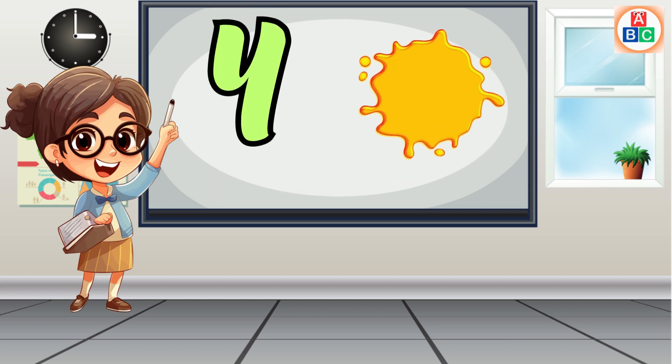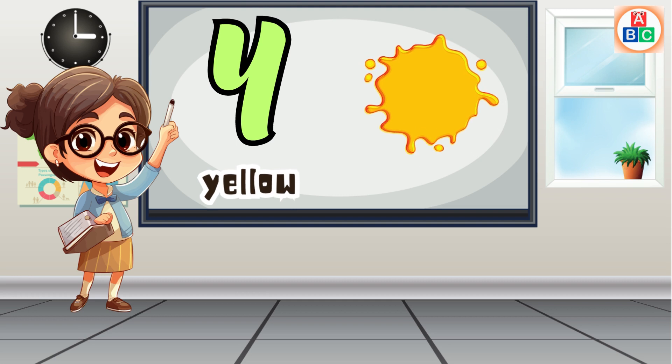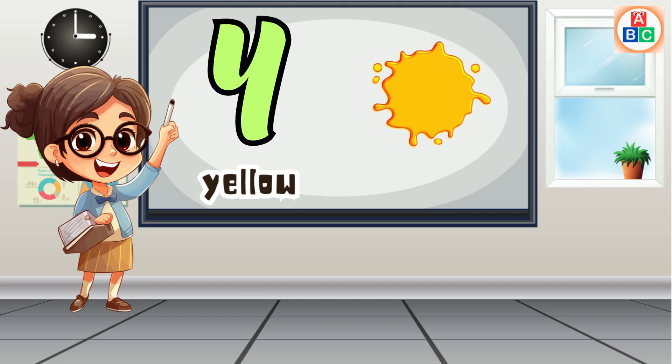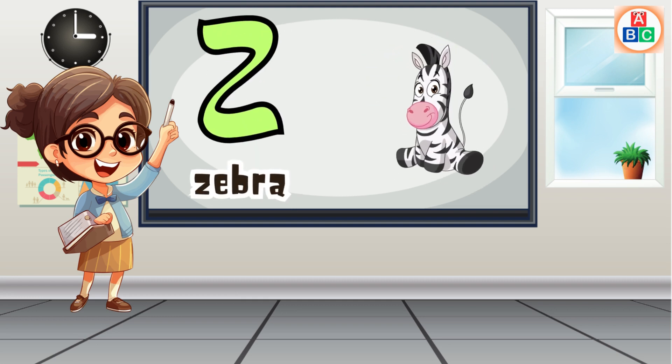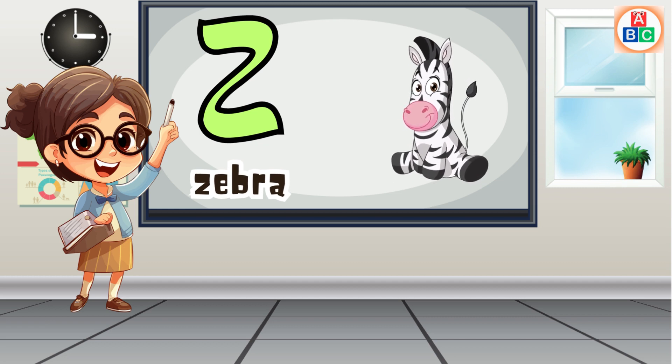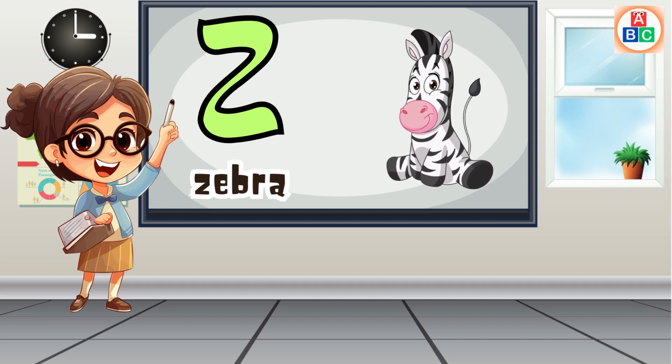Y is for yellow, ye-ye-yellow. Z is for zebra, z-z-zebra.